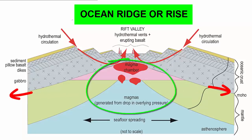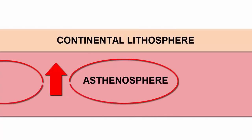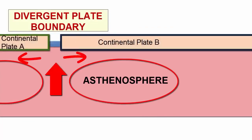The drop in pressure on the underlying mantle rock causes it to melt, and now that it's lower density, the melted rock, or magma, rises to the surface and erupts along the center of the rift valley. When new convection cells form under a continent, divergence tears the continent apart.